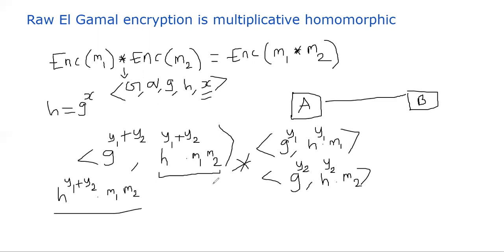This basically means I can rewrite this whole thing as G power X times like this. And then he divides it by the first component, which is G power. He takes the first component and multiplies it with the X first. He knows X. I mean, basically raise the power of the first component by X. Thereby, he can cancel this. He gets M1 M2. That's how decryption works.